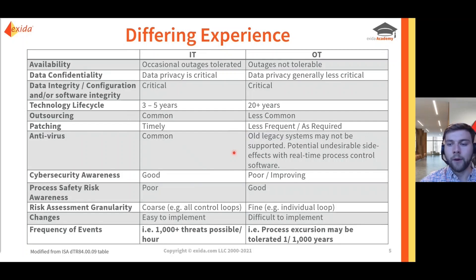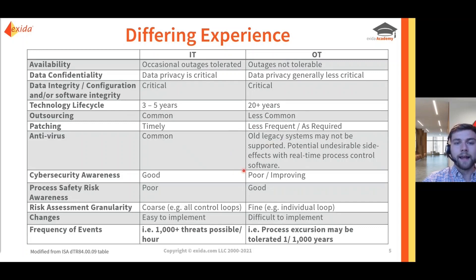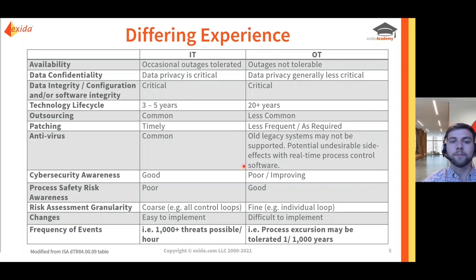For antivirus and endpoint protection, this is very common on IT systems and tends to be well implemented. On the OT side, older legacy systems may not support antivirus, which can make it more difficult to apply, particularly because on those older systems it could have a negative impact on real-time process control software and could be an availability concern. However, this area has been changing — all major equipment suppliers are now supporting antivirus on their DCS control system platforms, so this is starting to improve for OT networks.